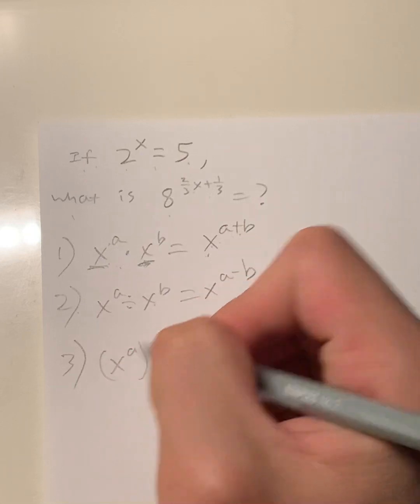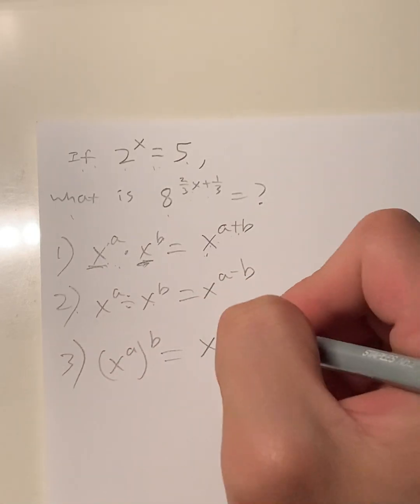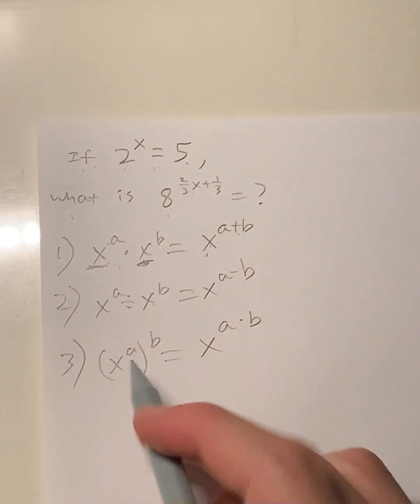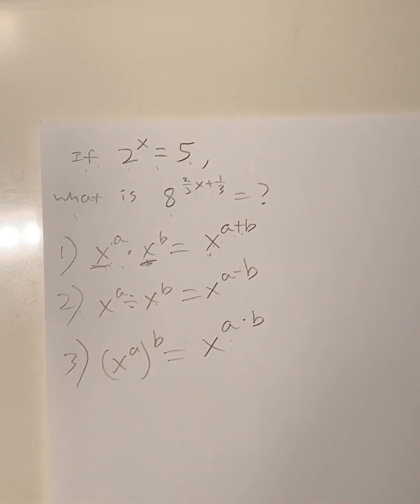Third rule: (x^a)^b. This is equal to x^(a×b). So when you remember these three rules, you should be set.